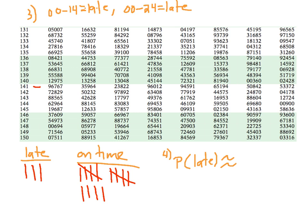Of the 17 things I tried, there were three times she was late. So the probability she was late is approximately 3 out of 17.